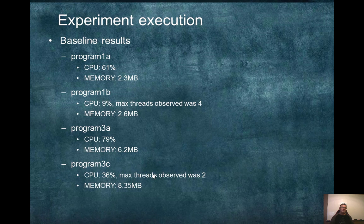These are the results from the baseline. For program 1A, the CPU average was pretty high. For 1B, it was not that high, which makes sense — you're running more threads, and I saw a max of four threads on that one. For program 3A, which is not multi-threaded, CPU was pretty high, and it went down considerably with 3C.